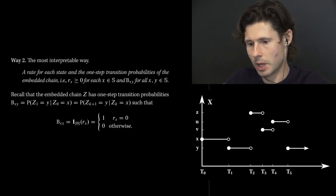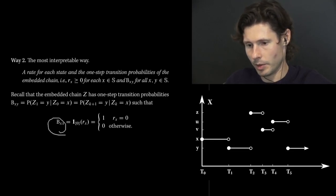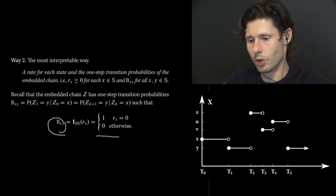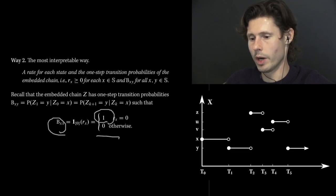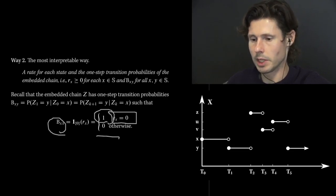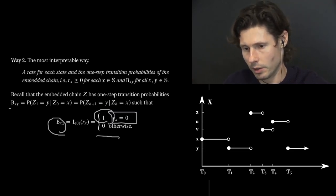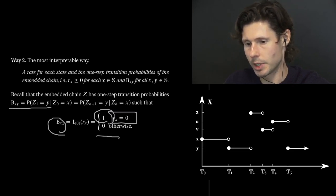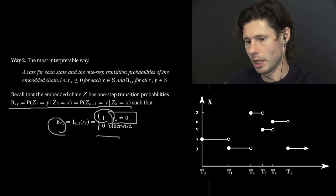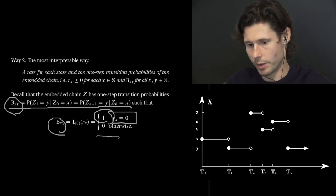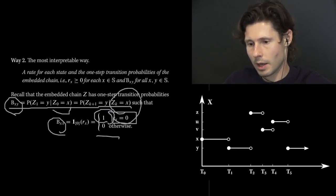A couple more notes. For the embedded chain, the self-transition probability has really only one case: either there are no self-transitions, or the self-transition probability is 1 whenever the rate is 0. Rate 0 means we stay in state x forever — we never leave. Therefore, the embedded chain just transitions back into state x with probability 1. Also, we're talking about homogeneous CTMCs, so that homogeneity property translates to the embedded chain — the probability of changing from state x to state y is the same at time 0 as at any time k.